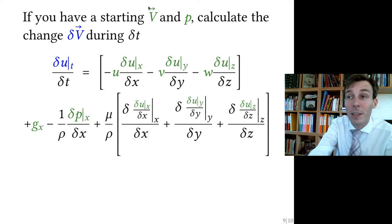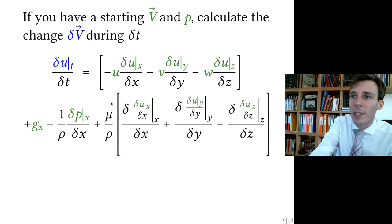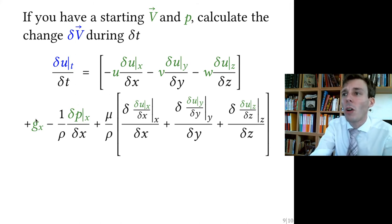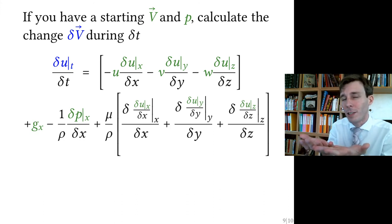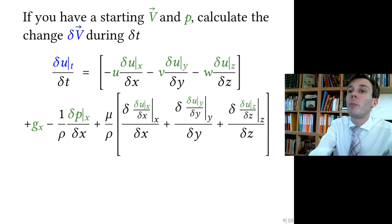For this, you start with your initial guess for velocity. This guess is the complete velocity field V and the value of p. All the values plotted green here in this equation—all of those are your initial guess for the velocity distribution and the pressure distribution.